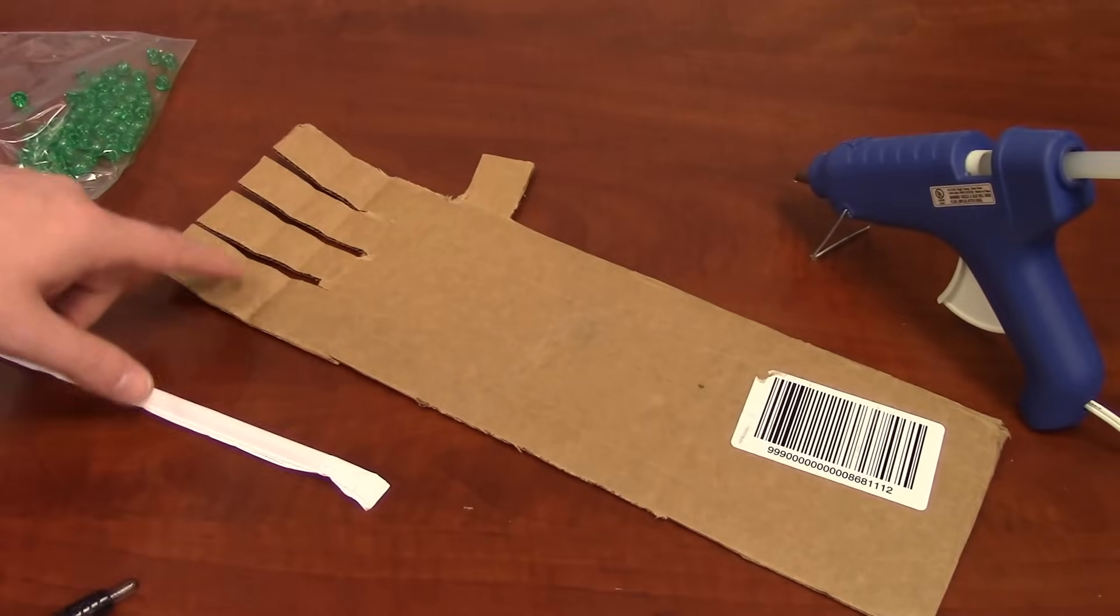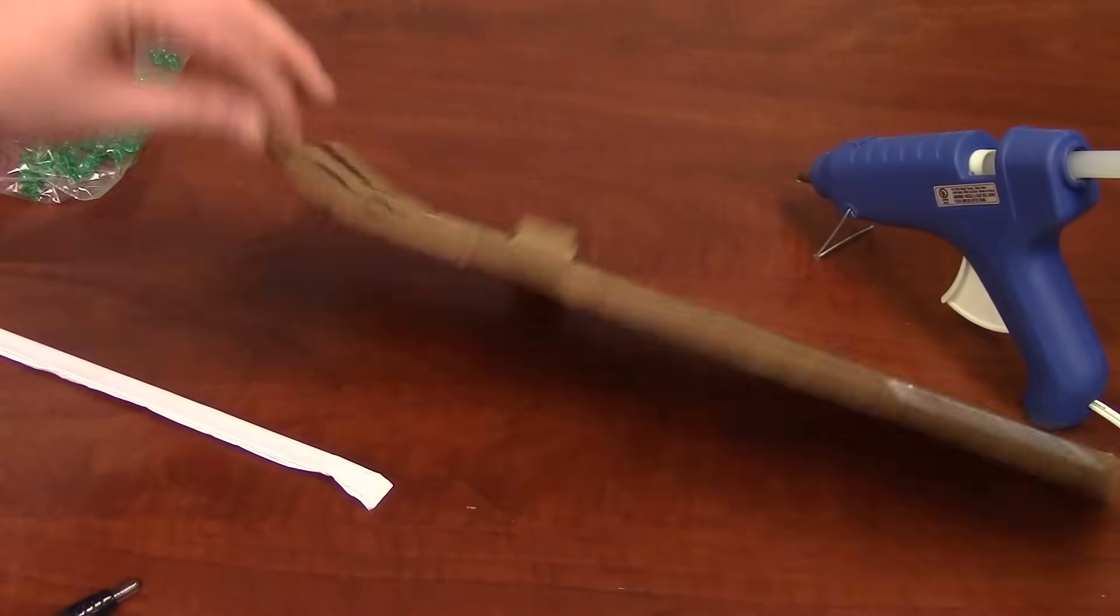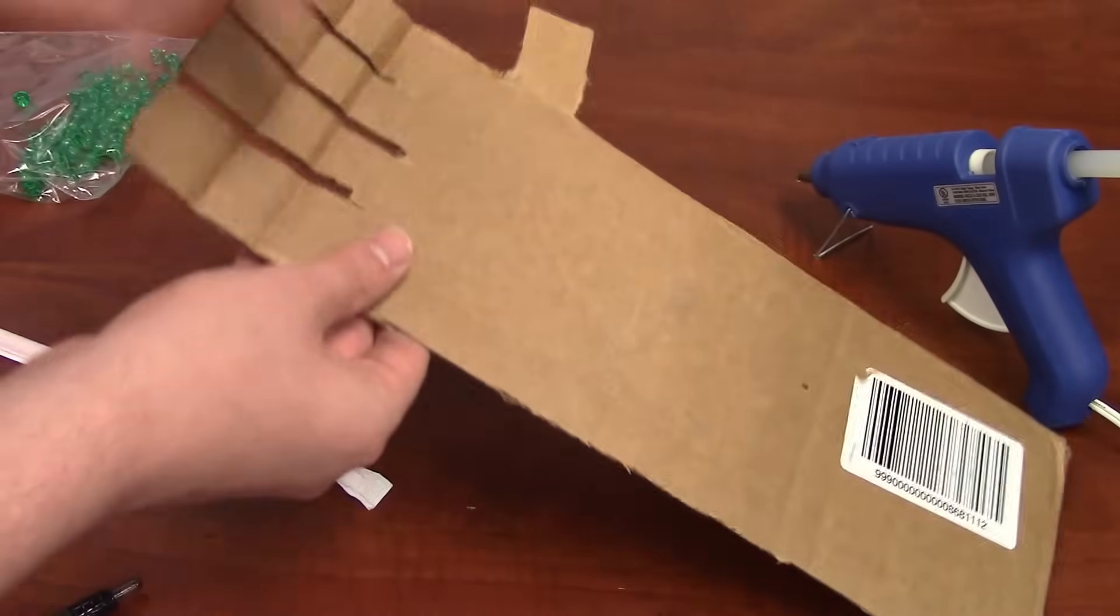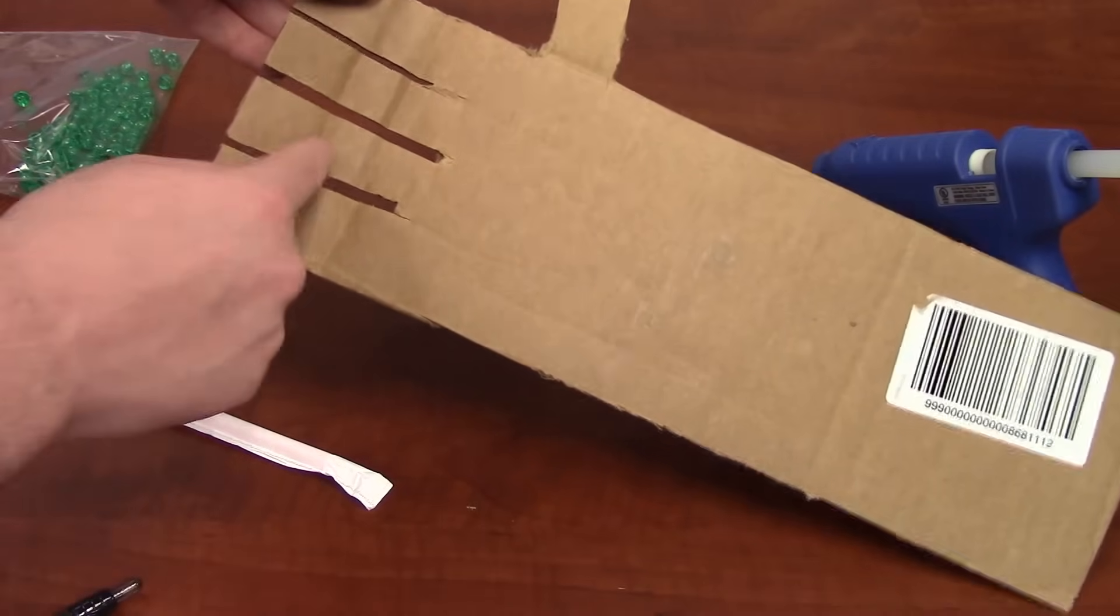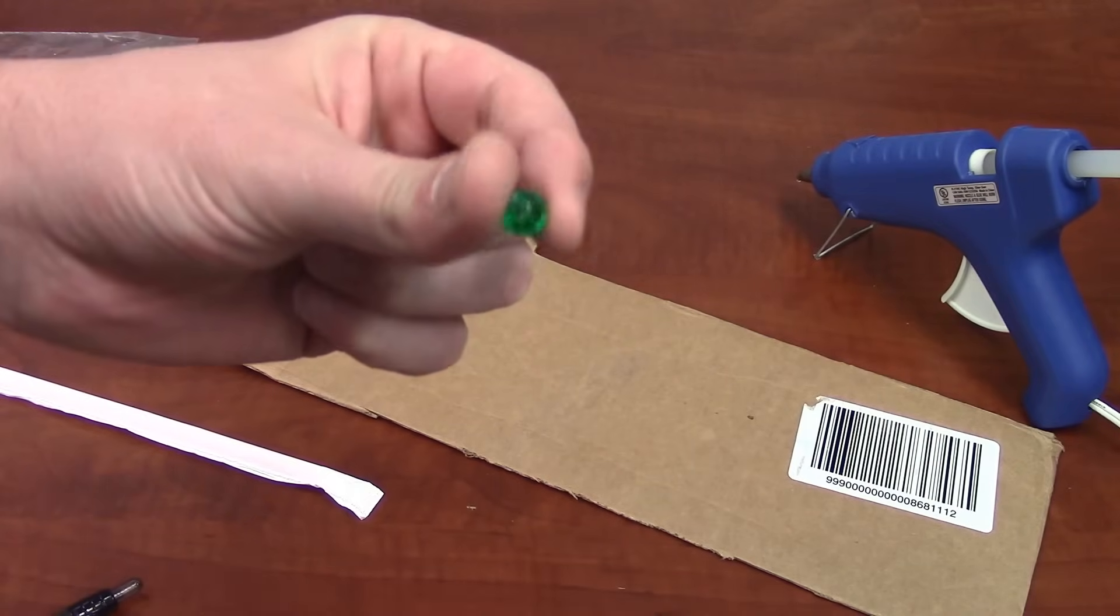Okay, so now to put little loops on each finger on the opposite side. The hand is going to bend like that. So we need something to secure the string on each finger.